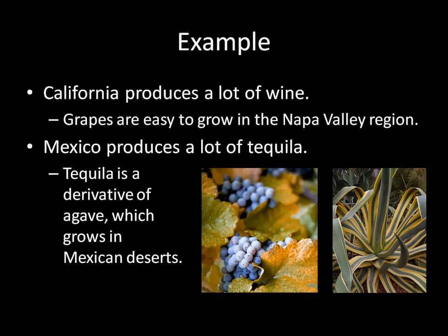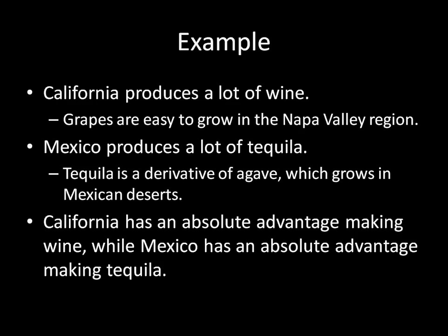The easiest and most fun example here is wine and tequila. California produces a lot of wine — grapes are really easy to grow in the Napa Valley region, so California winemakers can make very good wine without having to pay too much, compared to trying to farm grapes in a climate not conducive to vineyards. In contrast, Mexico can produce a lot of tequila. Tequila is a derivative of agave, which grows in deserts, and Mexico has a lot of desert space, so agave is much easier to grow there than in a fertile region like Napa Valley. So we can say California has an absolute advantage in making wine, while Mexico has an absolute advantage in making tequila.